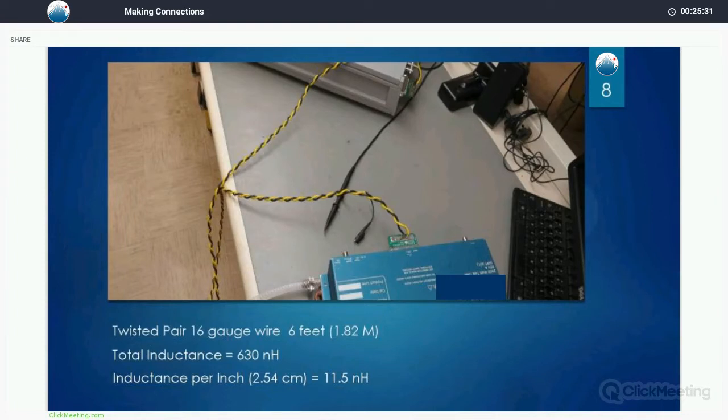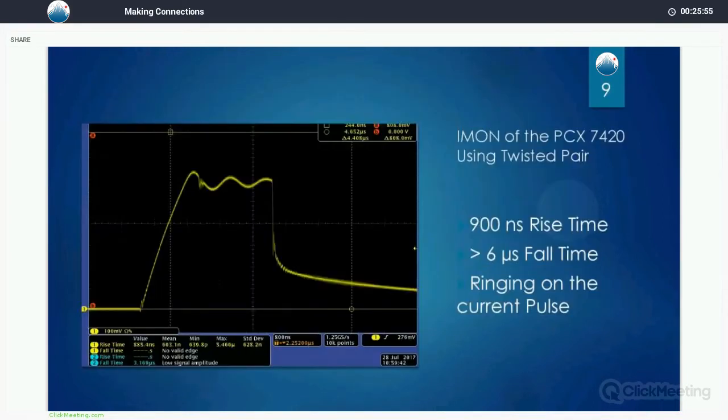In this case we're going to use twisted pair. The yellow and black wires is 16 gauge. We've got six feet of it. We're connecting it between the driver and the load. The load is the blue box at the bottom there. We've soldered the wires to a PC board that we have pushed into the load with the connector. The inductance of that six feet of wire is 630 nanohenries. Let's see what the result is.